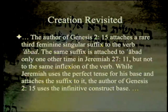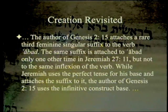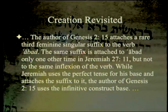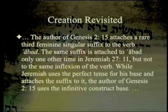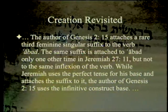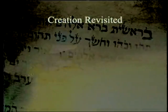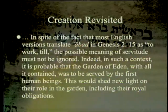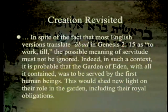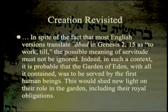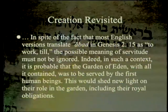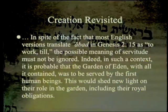The author of Genesis 2:15 attaches a rare third feminine singular suffix to the verb 'abad,' the same suffix attached to 'abad' only one other time, in Jeremiah 27:11. In spite of the fact that most English translations translate 'abad' in Genesis 2:15 as 'to work' or 'to till,' the possible meaning of servitude must not be ignored. Indeed, in such a context it is probable that the Garden of Eden, with all it contained, was to be served by the first human being — so our dominion is supposed to be in service to those over whom we have dominion.